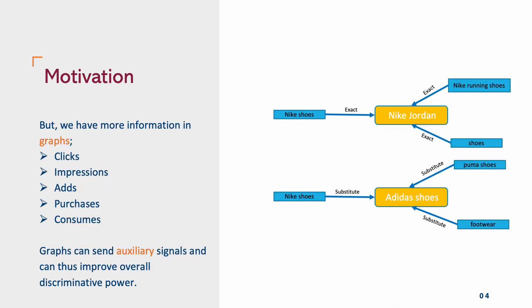Thus, we approach this problem by also including the auxiliary behavioral signals that are available to us as graphs. For example, clicks, impressions, purchases among others can provide us more information, which in turn can help improve our models discriminator power over the given examples.